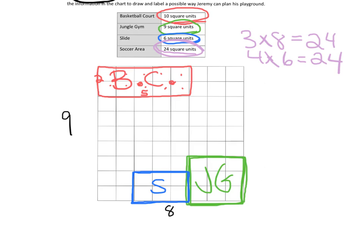So I will line it up right here. 1, 2, 3, 4. There's my 4. And then 1, 2, 3, 4, 5, 6. So there is my 6. So here is my 24 square units. And I'm going to call that the S.A. for soccer area.